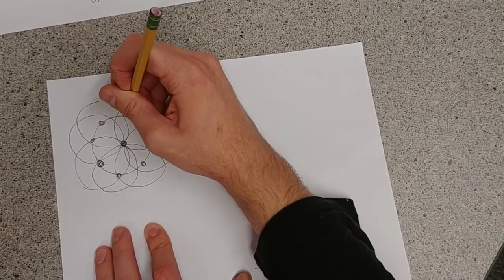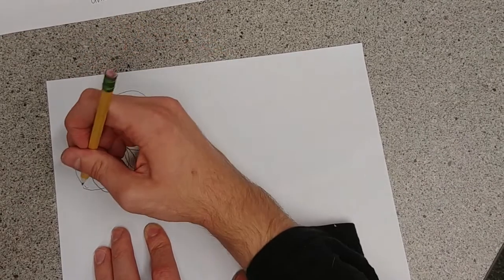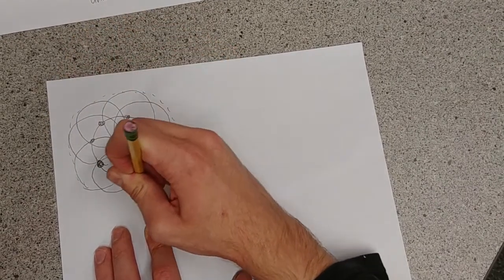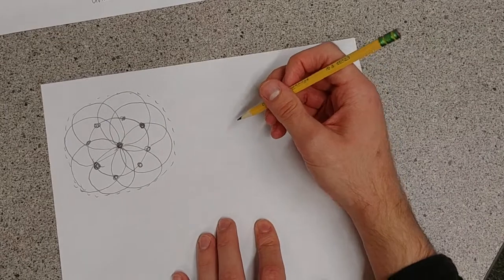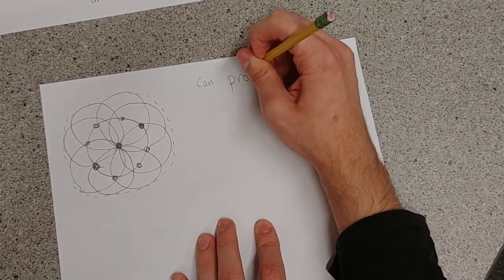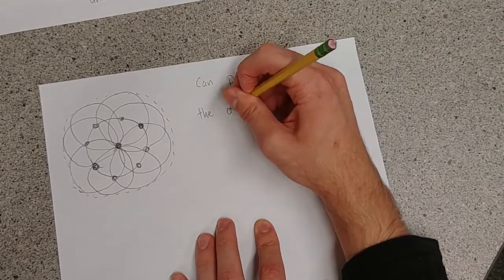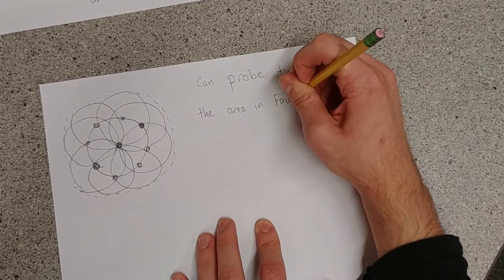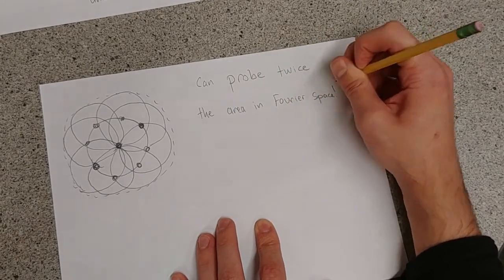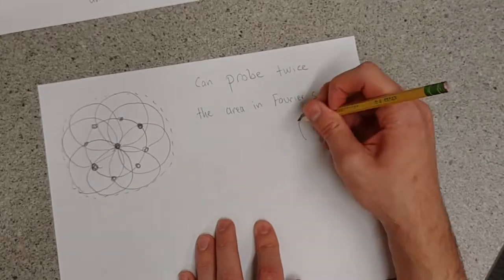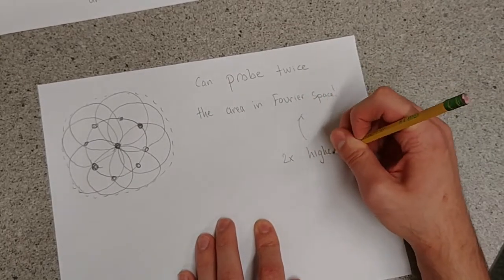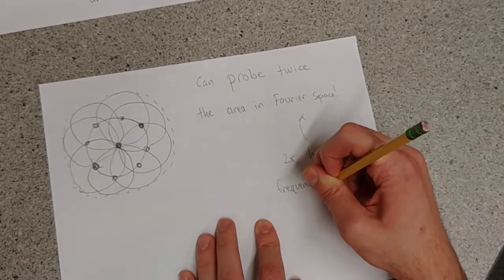But then, if we then rotate those line patterns until we get different and different moiré fringes, we're actually able to increase our Fourier space coverage by two-fold. So, we can probe twice as much. Twice the area in Fourier space means two times higher frequency signals can be captured. So, that much finer information we're still able to get even though we're not imaging it directly.